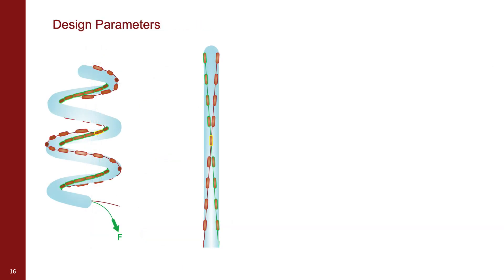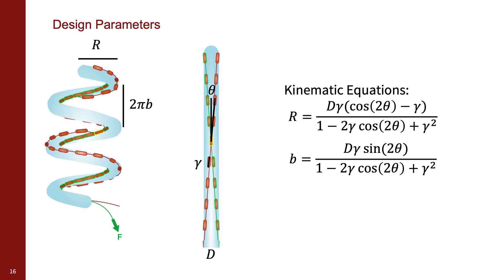Previous work showed that the parameters defining the shape of the helix, the radius r and the pitch b, can be related to the tendon shape defined by the angle theta, the ratio of the stopper to gap length gamma, and the tube diameter d, using a set of kinematic equations.